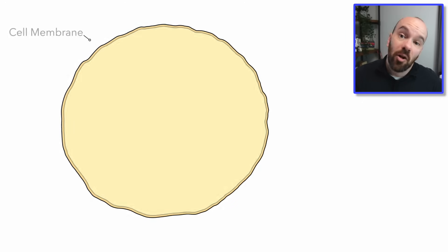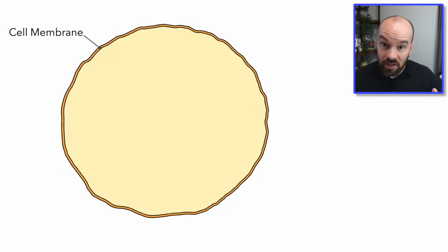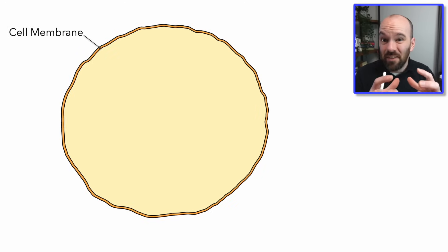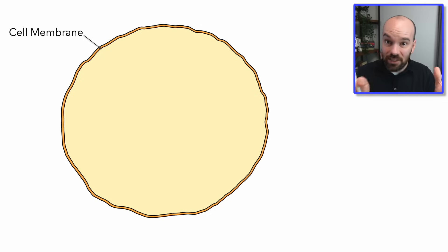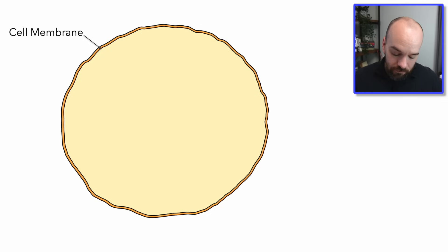The first thing I want to talk about is the cell membrane. Our cells are these little bags of fluid, and like any bag, it's got to have some surface around it to keep all of that fluid in — and that's our cell membrane.